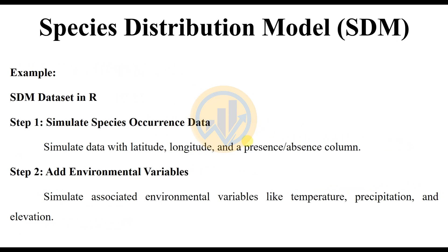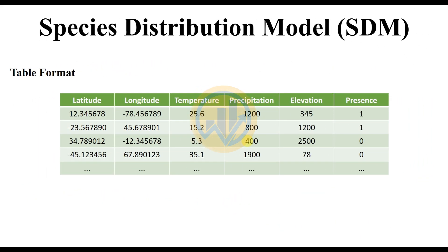The example dataset in R for the Species Distribution Model simulates species occurrence data with latitude, longitude, and a presence/absence column, and adds environmental variables such as temperature, precipitation, and elevation. The table format for analyzing the SDM in R Studio includes columns for latitude, longitude, temperature, precipitation, elevation, and presence data.